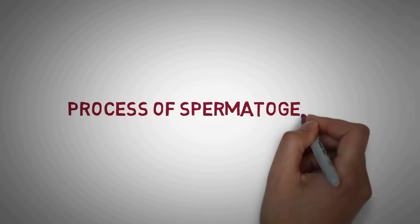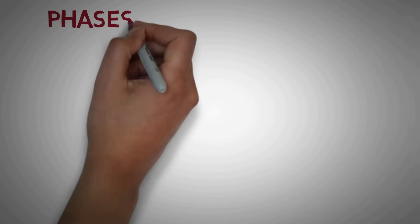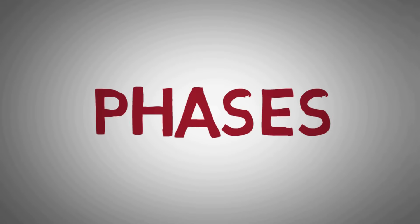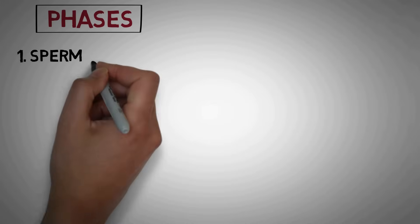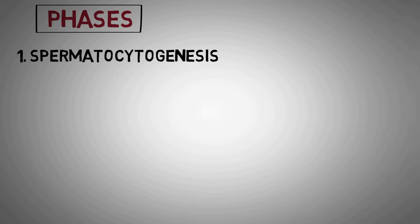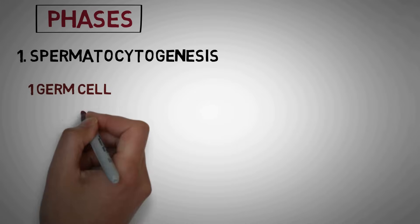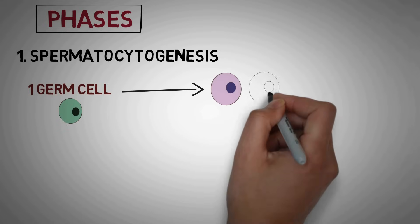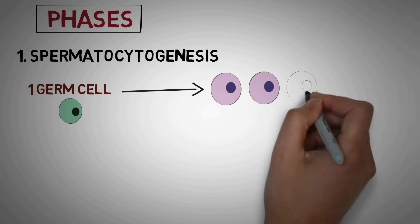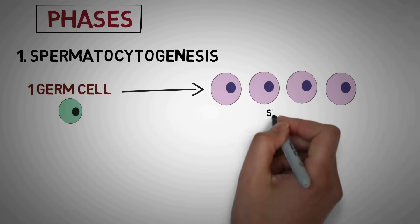Now let's talk about the process of spermatogenesis in a bit more detail. The process is divided into two phases. The first is spermatocytogenesis, in which one germ cell divides into four precursor gametes known as spermatids, which are immature sperms.